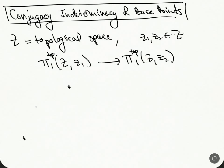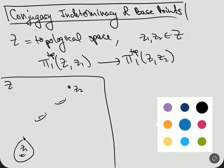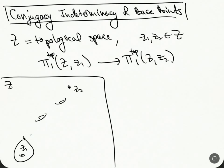It's really easy to see from this picture. Here's Z — Z could have some holes in it. Here's Z1 and here's Z2. We have a loop here; maybe it goes around something so it's non-trivial. This whole thing is Z. This loop we'll call Alpha, and Alpha represents a class in π₁(Z, Z₁).